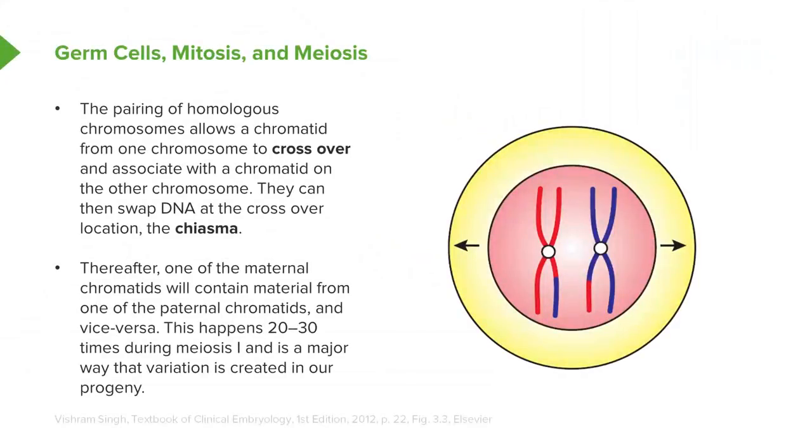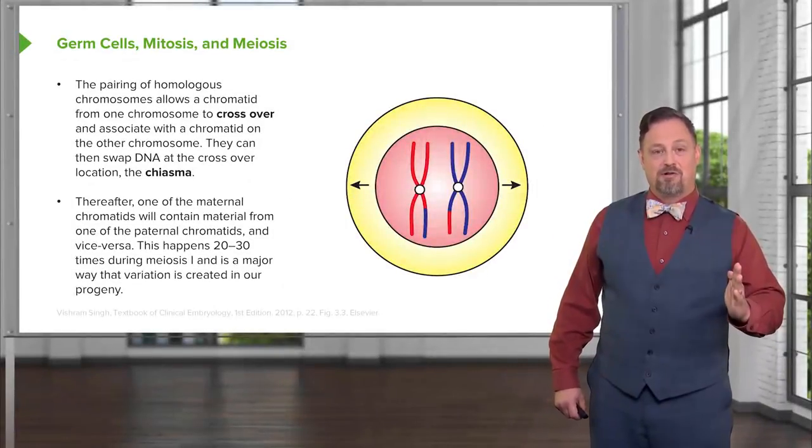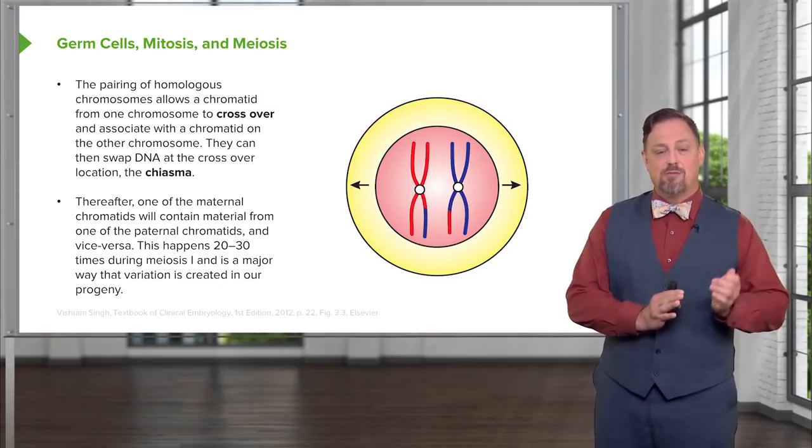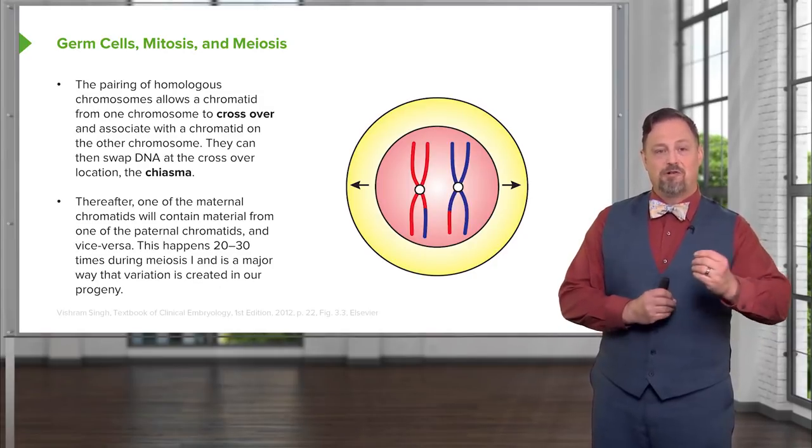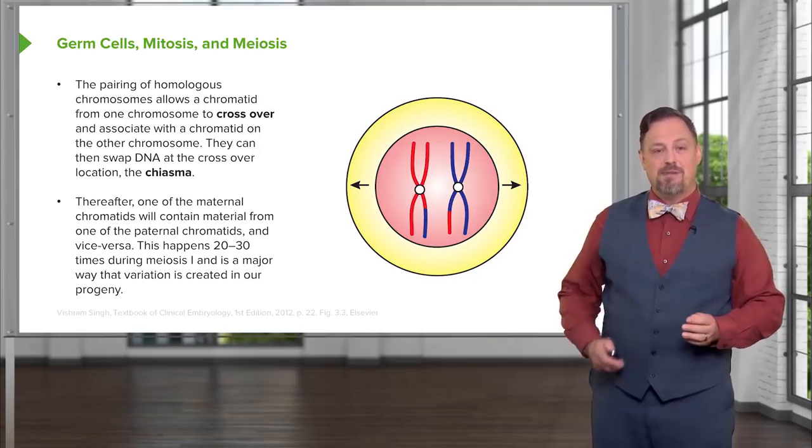This process happens 20 to 30 times during meiosis one and it's a way that we've shaken up the genetic information in the germ cells. Whereas one of these chromosomes had a strictly paternal or maternal chromosome before, we now have chromatids made up of both maternal and paternal material so we've already introduced a massive amount of variation into these germ cells.